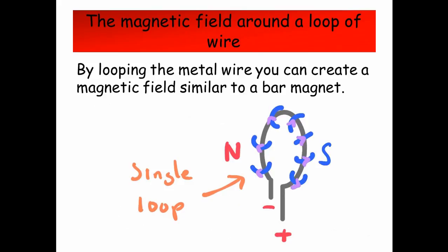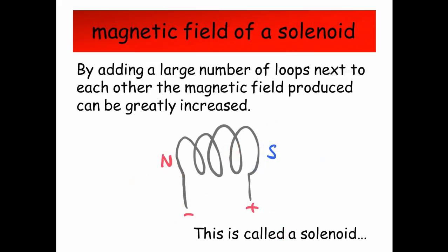A magnetic field line around a loop of wire. By looping the metal wire, you can create a magnet similar to that of a bar magnet. So by adding a large number of loops next to each other, the magnetic field produced can be greatly increased. This is called a solenoid.